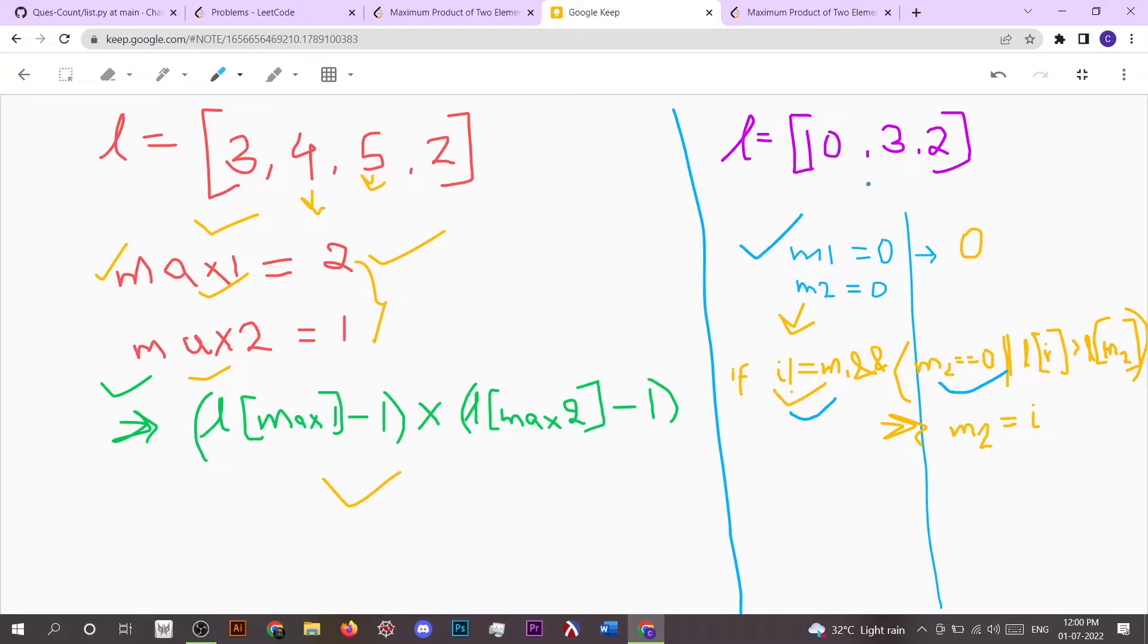If we talk about this list L, after doing the iteration we got m1 as 0 because 10 is the maximum value inside that list. Now to get m2, we check if our i value - so in a for loop the iteration goes from 0 - if i not equal to m1 and m2 equals 0, or L[i] is greater than L[m2], then we simply replace the value of m2 with i.